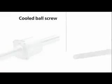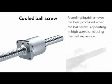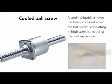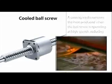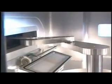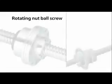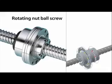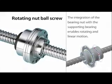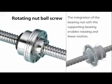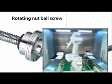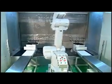Cooled ball screws: a cooling liquid is forced through the center of the nut, removing the heat produced when the ball screw is operating at high speeds and reducing thermal expansion. This enables the ball screw to maintain a high level of accuracy when running at high speed. They are used in high-speed machine tools and high-speed general processing center machines. Rotating nut ball screws integrate the bearing nut with a supporting bearing, enabling rotating and linear motion. These ball screws are used in semiconductor machinery, industrial robots, woodworking machines, laser processing machines, and conveyor devices.